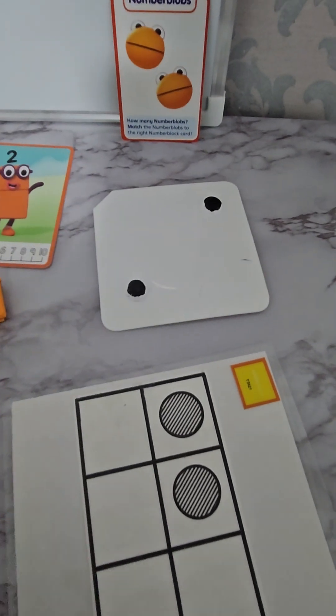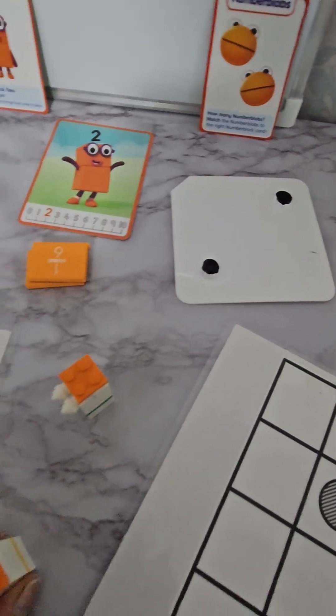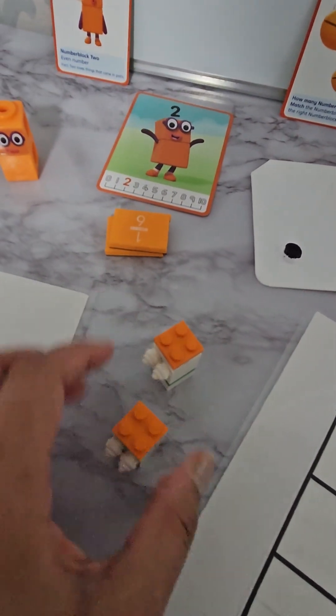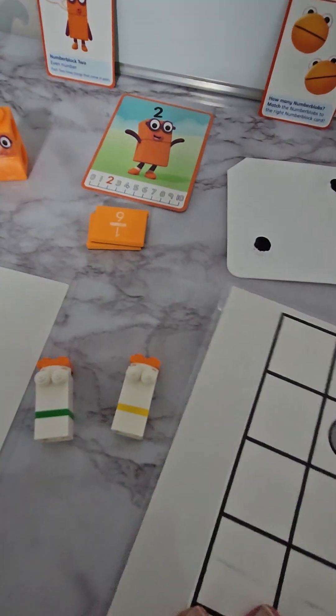How many things can you find around your house that represent two? Two friends. Number 2. Remember, number 2.